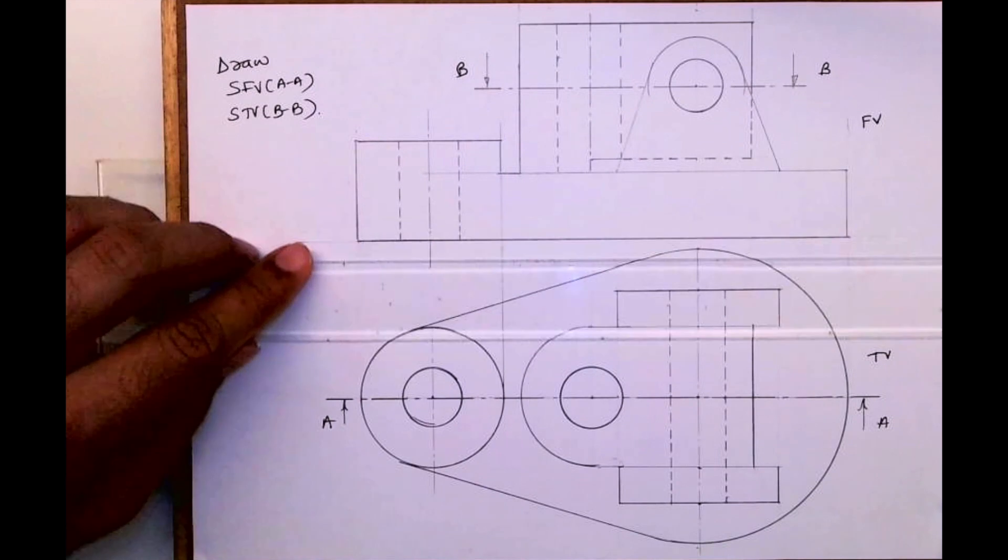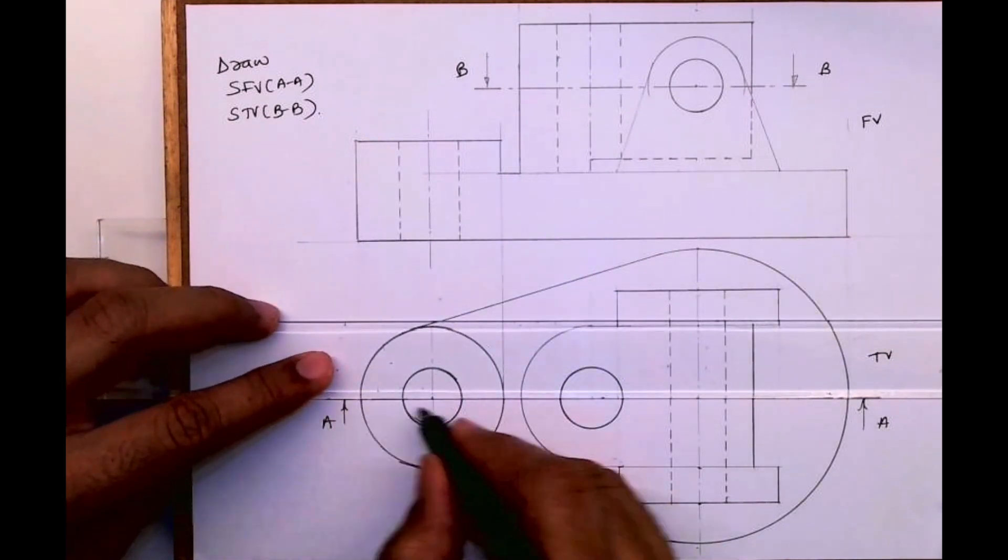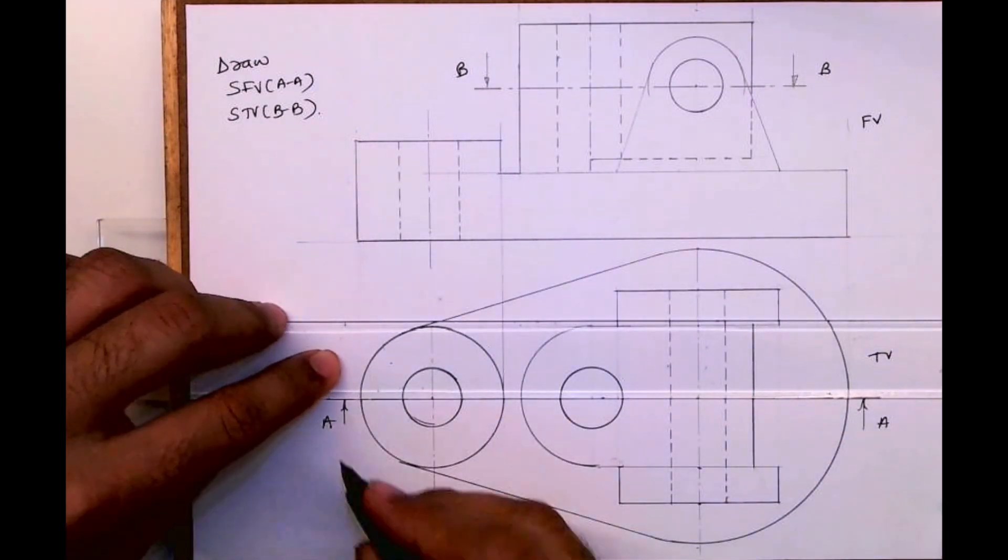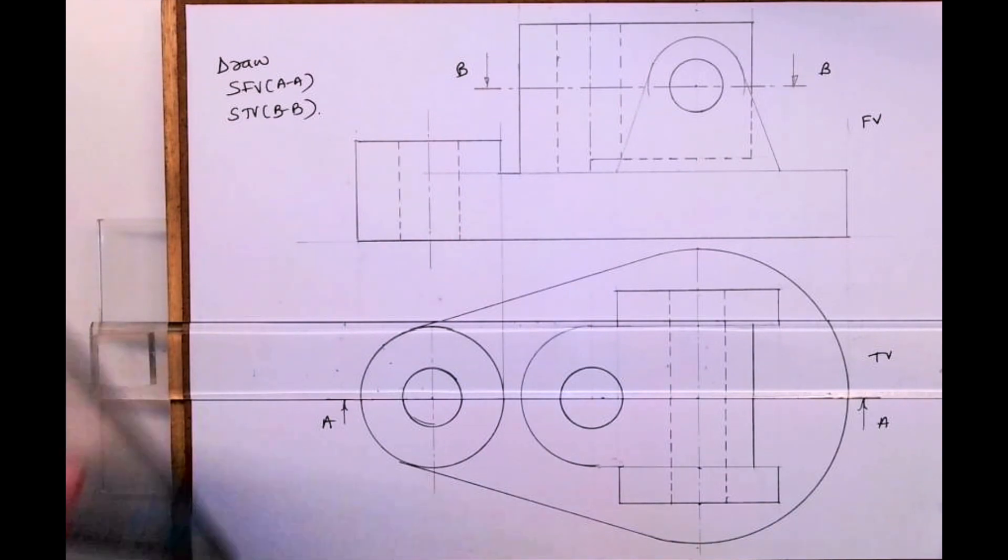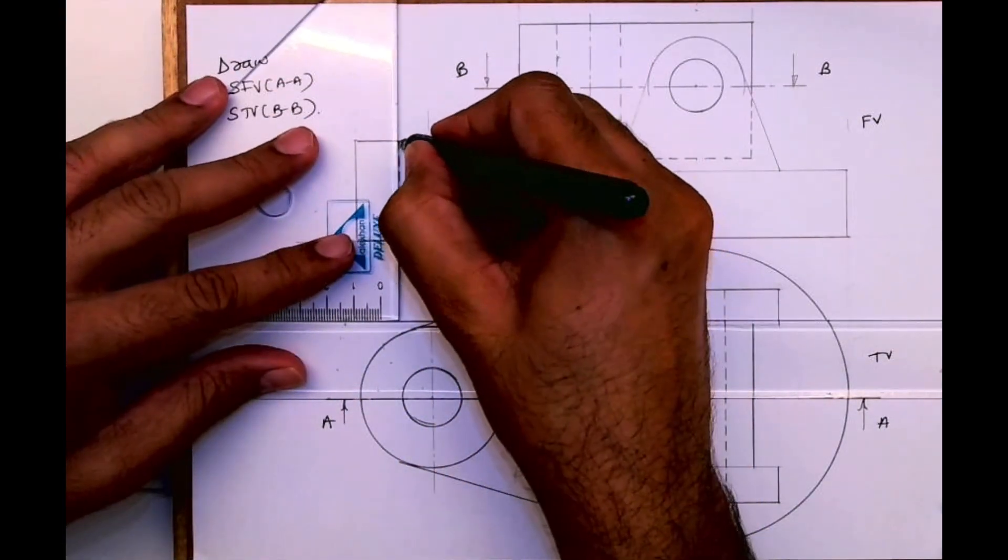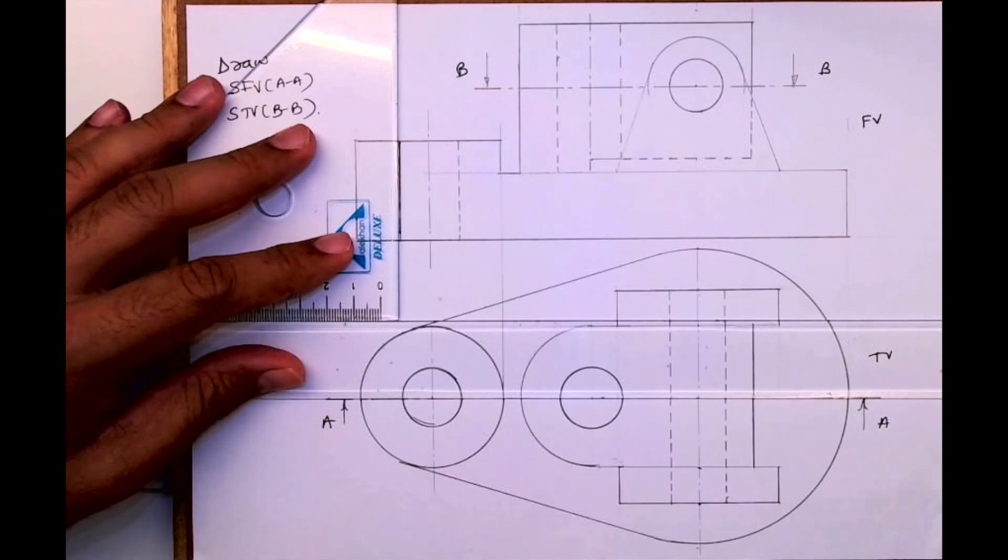First we'll see the cutting plane line passing through A. It is passing through this circular part and it is cutting this dotted line, so the dotted line will become dark.